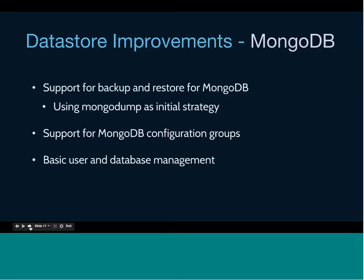Now I want to talk about what we're planning in Liberty. Going with the theme of datastore improvements, we have support today for MongoDB and MongoDB clusters. However, we don't have support for a lot of common Trove scenarios for MongoDB, so we're looking to add support for these: backup and restore for MongoDB using MongoDump as an initial strategy; support for MongoDB configuration groups — extending the same idea we have for MySQL to MongoDB — so you can tweak config values through the Trove API without having to SSH onto the box; and basic user and database management for MongoDB through the Trove API.